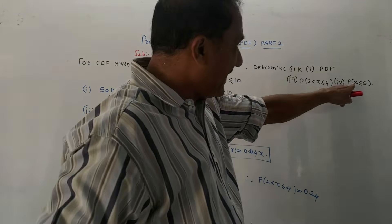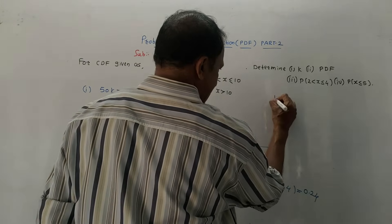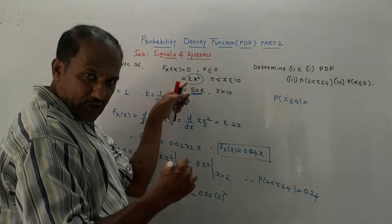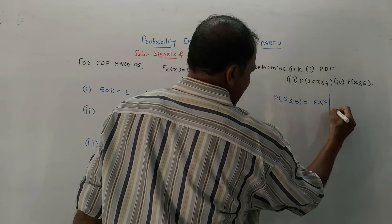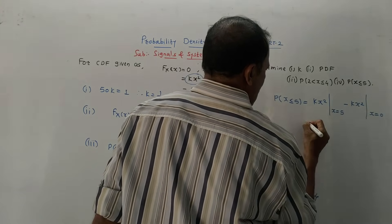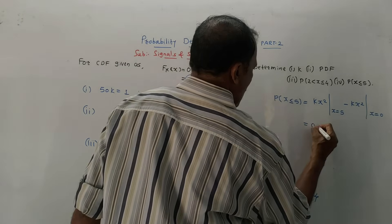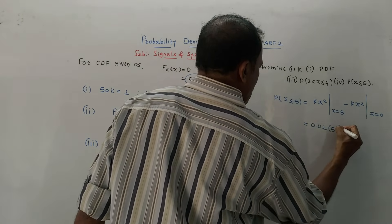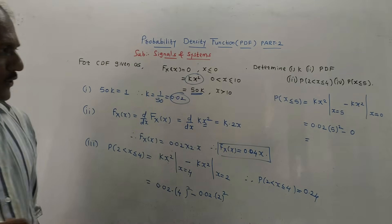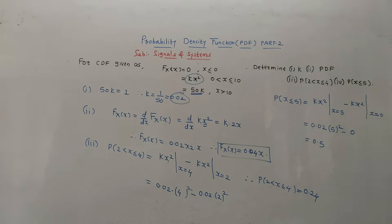Last part: probability X less than or equals to 5. The lowest available range is 0, so evaluate K·X² at X equals 5 minus K·X² at X equals 0. With K equals 0.02, this is 0.02 into 25 minus 0. So 0.02 into 25 equals 0.5. This is the answer: probability X less than or equals to 5 is 0.5.